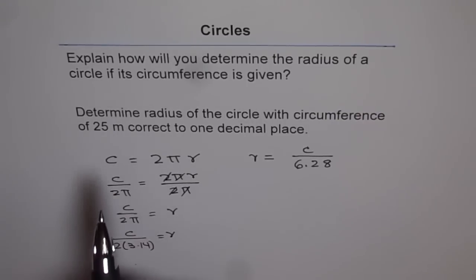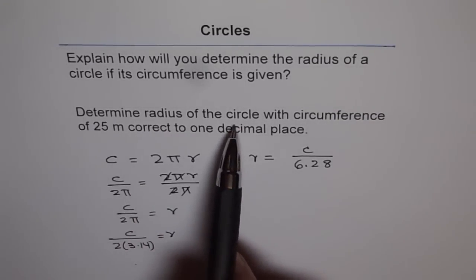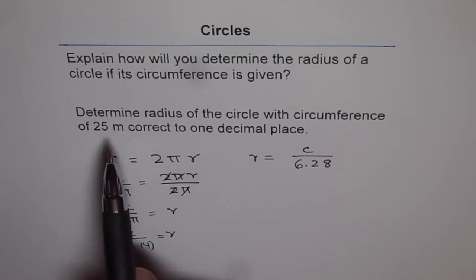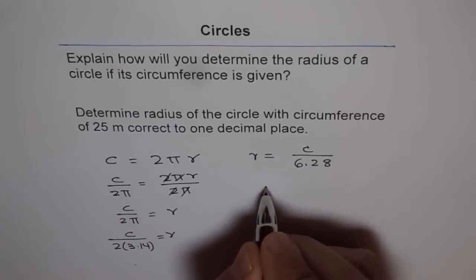Now, let's do the problem. The question is, determine radius of the circle with circumference of 25 meters correct to one decimal place.